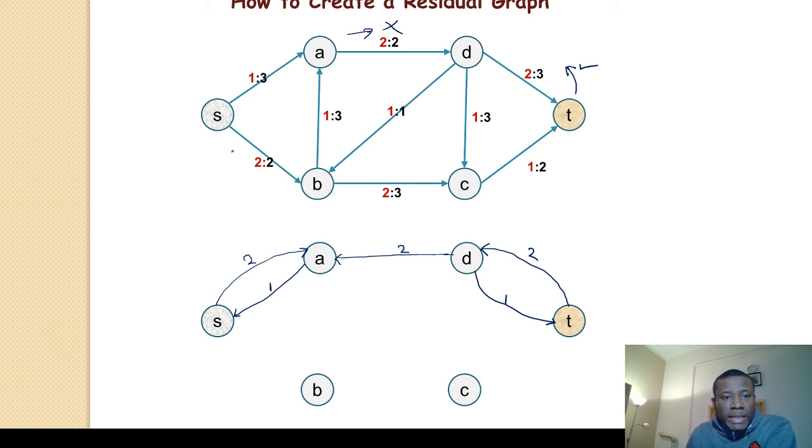Let's look at S to B. Here it's saturated. We can't push anything further. We can only push backwards by removing the 2 that's already existing. So let's add a backward edge.